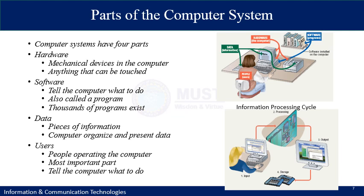There are also two external or supplementary parts of the computer system. Without them, hardware and software cannot be useful for the user. The fundamental supplementary parts are data and the user. Data is the pieces of information which the computer organizes and presents to the user. Users are the people operating the environment — they are the most important part and they tell the computer what to do.